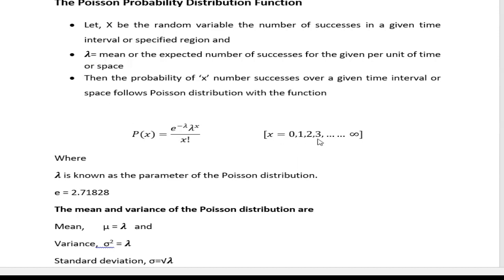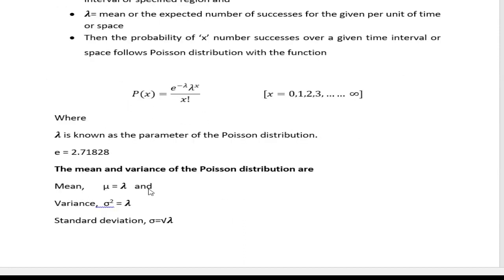The value of x is 0, 1, 2, 3, up to infinity. There is only one parameter in the Poisson distribution — lambda — which is the mean of the distribution. For binomial distribution we had two parameters: probability of success and number of trials. But for Poisson distribution we have only one parameter, lambda. Interestingly, the variance of the Poisson distribution is also lambda, and the standard deviation is the square root of lambda — the mean and variance are the same.